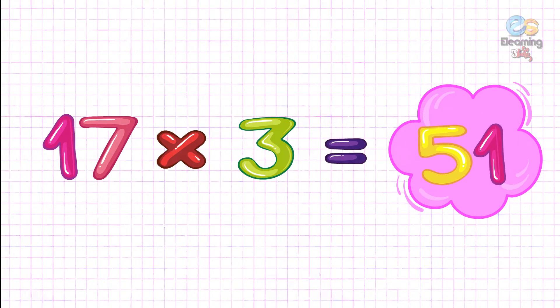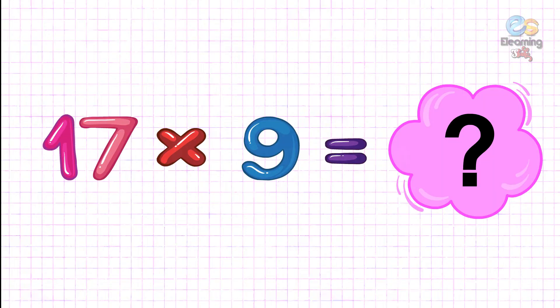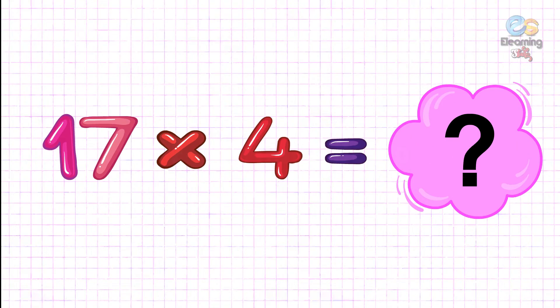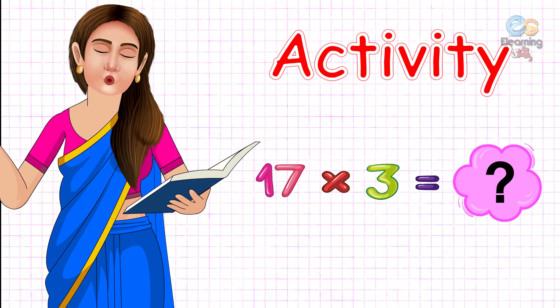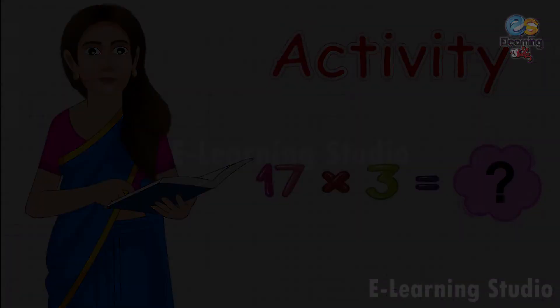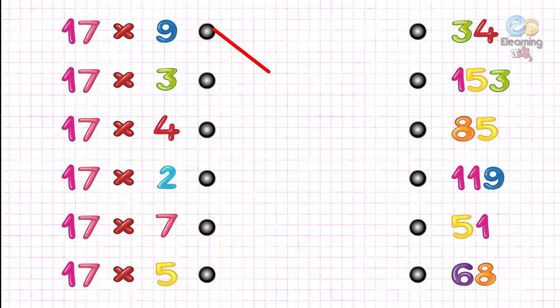51, 17 nines are 153, 17 fours are 68. So let's now do the matching activity. 17 nines are 153.